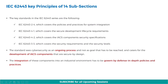Out of the 14 subsections discussed, the key standards in the 62443 series are: 62443.2.4, which covers policies and practices for system integration; 62443.4.1, which covers secure development lifecycle requirements; 62443.4.2, which covers IACS components' security specifications; and 62443.3.3, which covers security requirements and security levels. The standard sees cybersecurity as an ongoing process and not as a goal to be reached, and caters for the development of IACS components that are secure by design. The integration of these components into an industrial environment must be governed by defense-in-depth policies and practices.